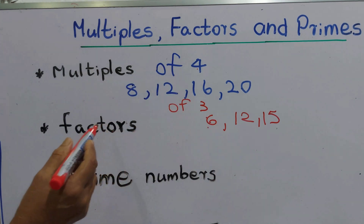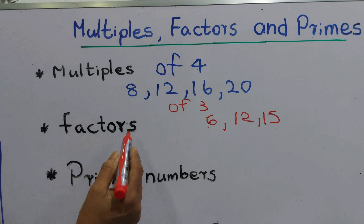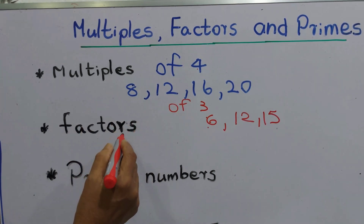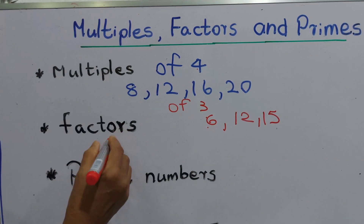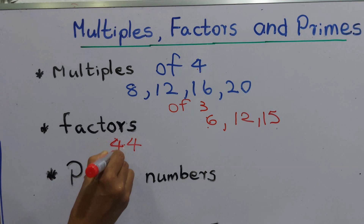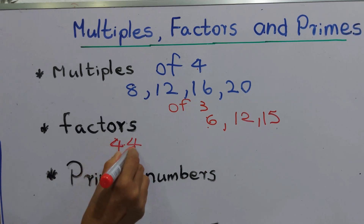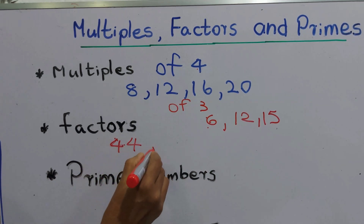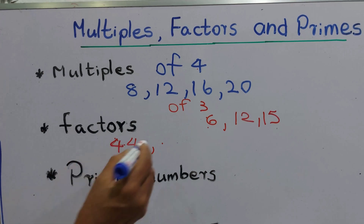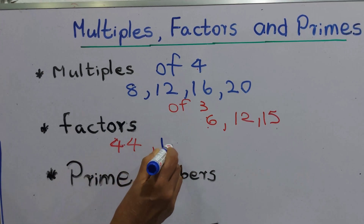When it comes to factors, a factor divides exactly into a given number. We will take the number 44. The factors of 44 are the numbers that divide it exactly: 1, 2, 4, 11, 22, and 44.